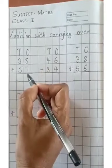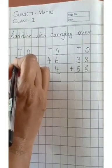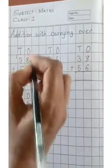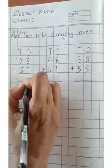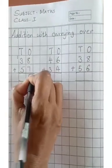8 plus 7 gives you 15. Carry 1 in the tens place and put 5 in the ones place.